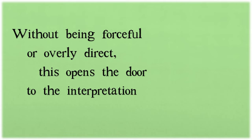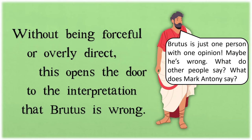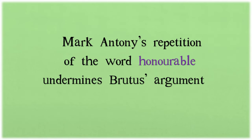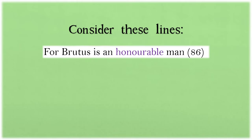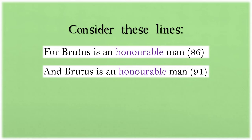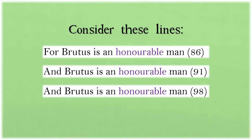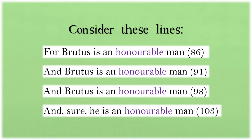Without being forceful or overly direct, this opens the door to the interpretation that Brutus is wrong. Brutus is just one person with one opinion — maybe he's wrong. Mark Antony's repetition of the word 'honorable' undermines Brutus' argument in a different way. Consider these lines: 'For Brutus is an honorable man' (line 86), 'And Brutus is an honorable man' (line 91), 'And Brutus is an honorable man' (line 98), 'And sure he is an honorable man' (line 103).